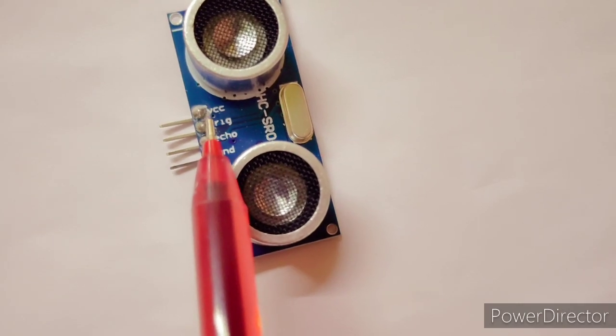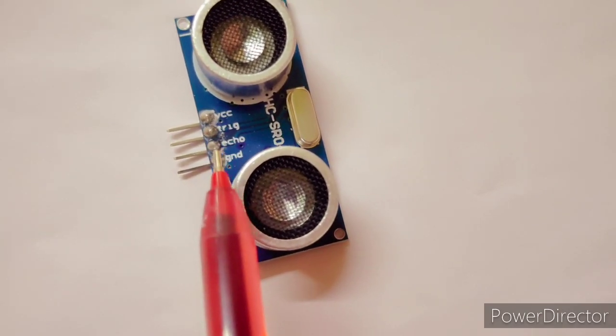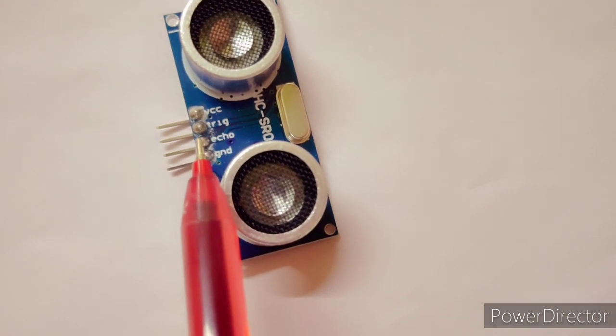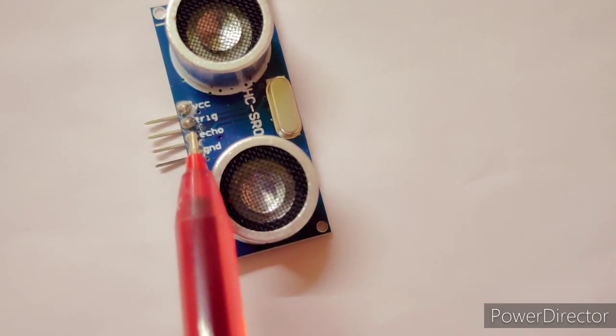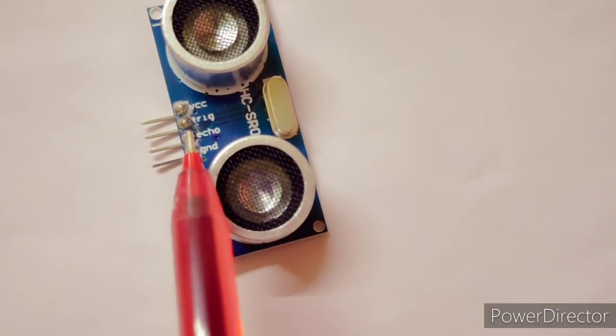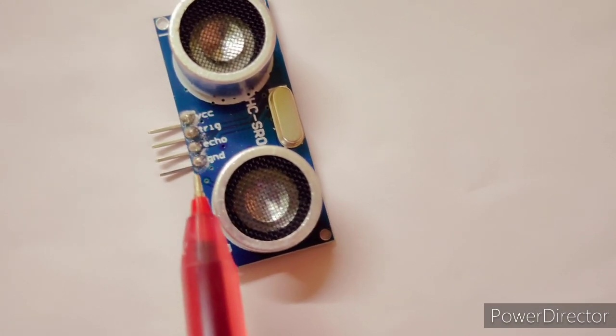At the same time, the module makes the echo pin high - that is our third pin. The waves are reflected by the object and the wave is absorbed by the receiver. This echo pin goes low.